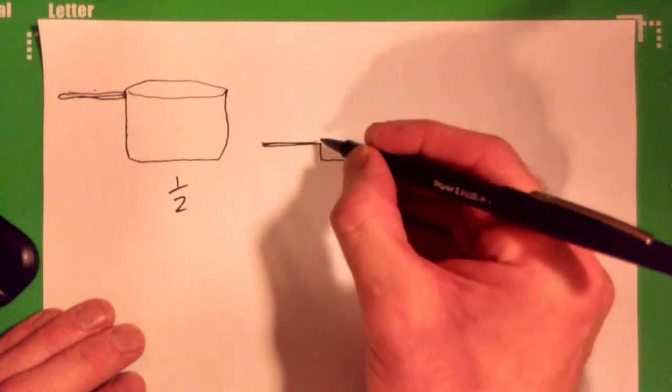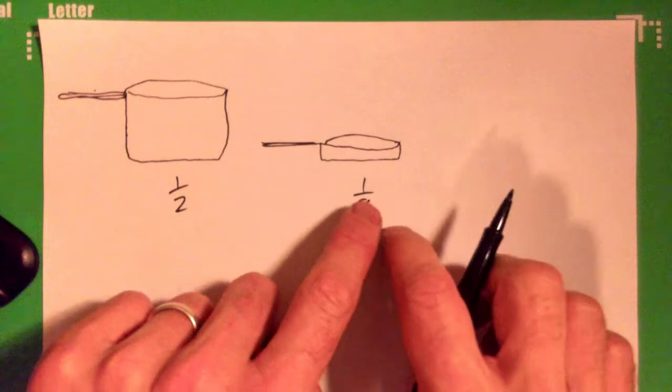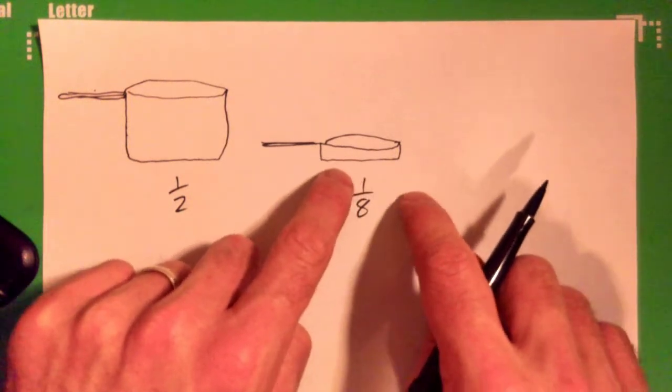It's supposed to look like that. So that's supposed to be one eighth. So that's a half a cup. That's one eighth of a cup. I should do that, shouldn't I? There we go.